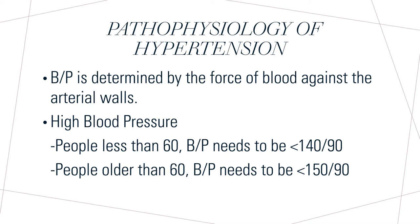How are those numbers determined? Blood pressure is determined by the force of blood against the arterial walls. The top number of a blood pressure reading is known as the systolic pressure, which measures the amount of pressure in your arteries when the heart beats, and the bottom number represents the diastolic pressure, which measures the amount of pressure when your heart rests between beats.